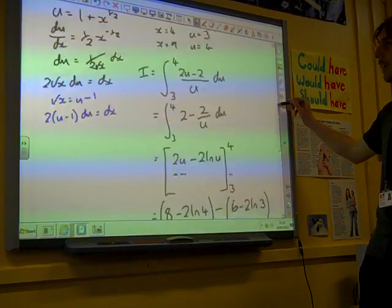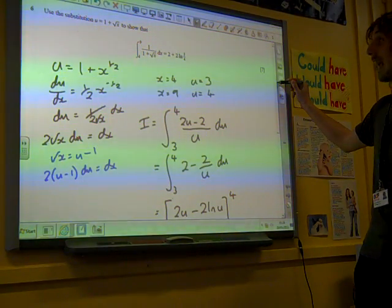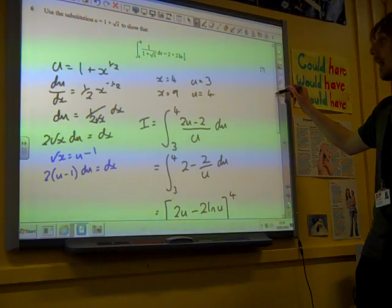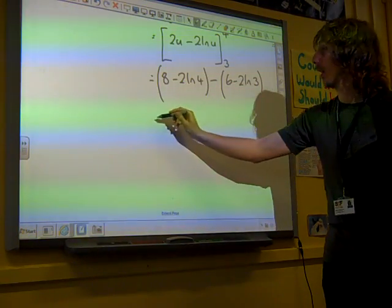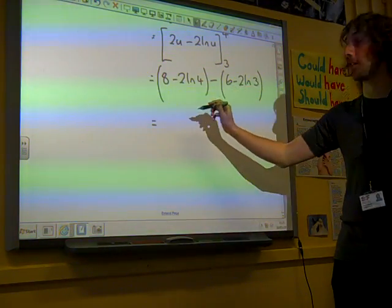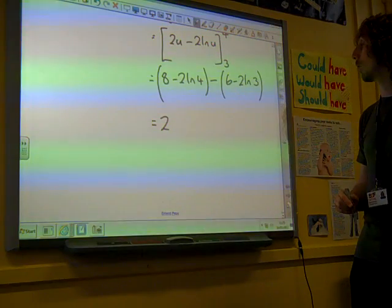The question wanted us to give our answer. Oh, it wanted us to get to 2 plus 2 ln 3 quarters. That's pretty nice. So we've got 8 minus 6 gives us the 2. We're happy with that.